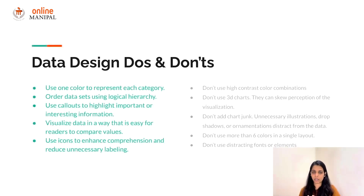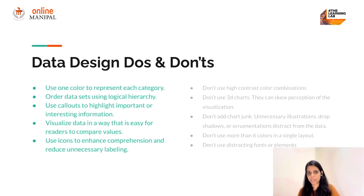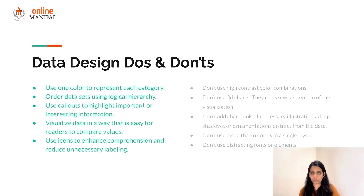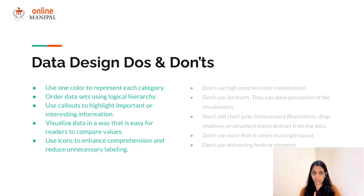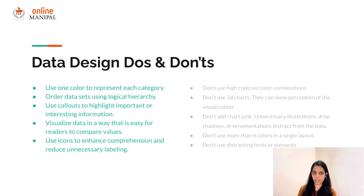On the don'ts side: avoid high-contrasting colors like red and yellow or combinations that may not be pleasing to the eyes. 3D charts are not recommended as they may skew the perception of the visualization. Don't add chart junk — remove anything ornamental like shadows, illustrations, or unnecessary grid lines that can distract from your data. Don't use more than six colors in a single layout. Finally, fonts should be standard and not distracting — the focus should always be on the data.